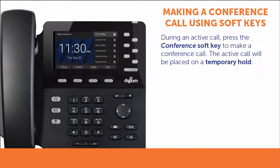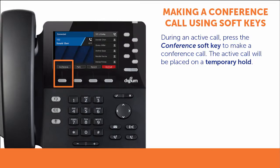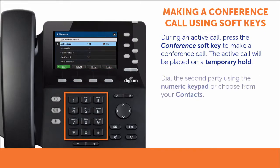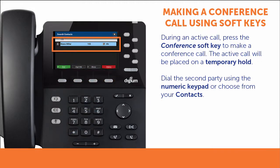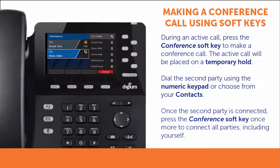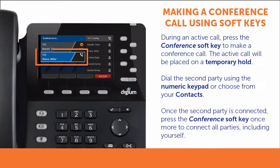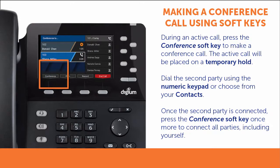To make a conference call using the soft keys, during an active call, press the Conference soft key. This will put the active call on a temporary hold. Make a call to a second party by dialing the phone number or choosing from your contacts. Once you have the second party on the call, press the Conference soft key once more to connect the participants, including yourself.